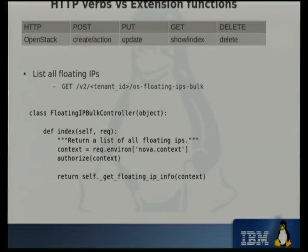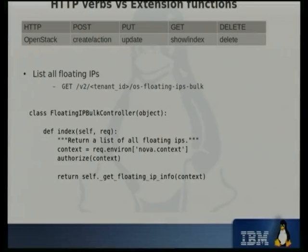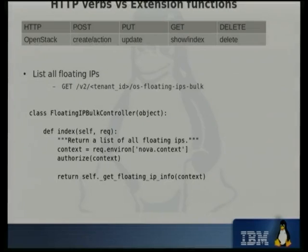Generalising it a bit more: the different HTTP verbs map to different functions within your class. POST will end up as create or action depending on what you apply it to. PUT maps to update, GET will either be show or index, and DELETE maps to delete. As another example, getting all the floating IPs for a tenant — you pass that GET command through and it maps to index. In this case there are no parameters, so nothing further is passed down. The get floating IP info function builds up a large dictionary, returns it, and the infrastructure handles converting it into the right format.